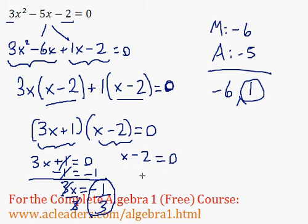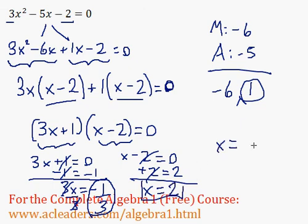And over on this side we can add 2 to both sides of the equation, and x is going to be equal to just 0 plus 2, which is 2. So x is equal to negative 1 over 3 or 2, and that is our answer.